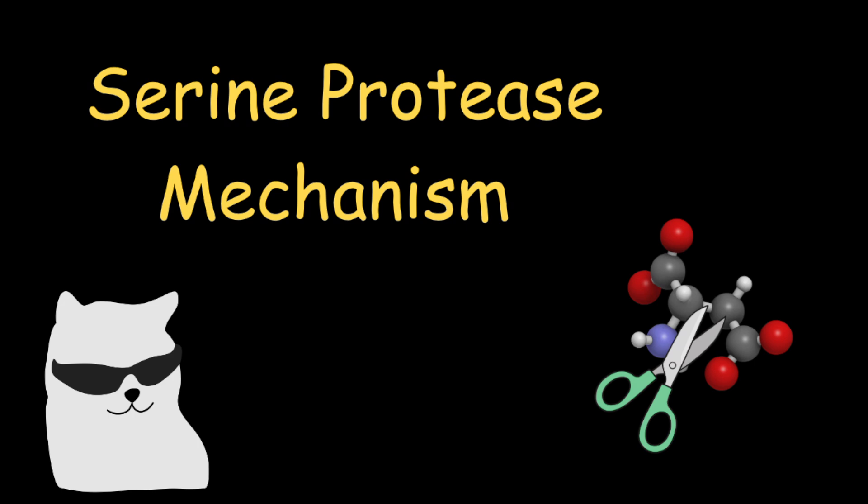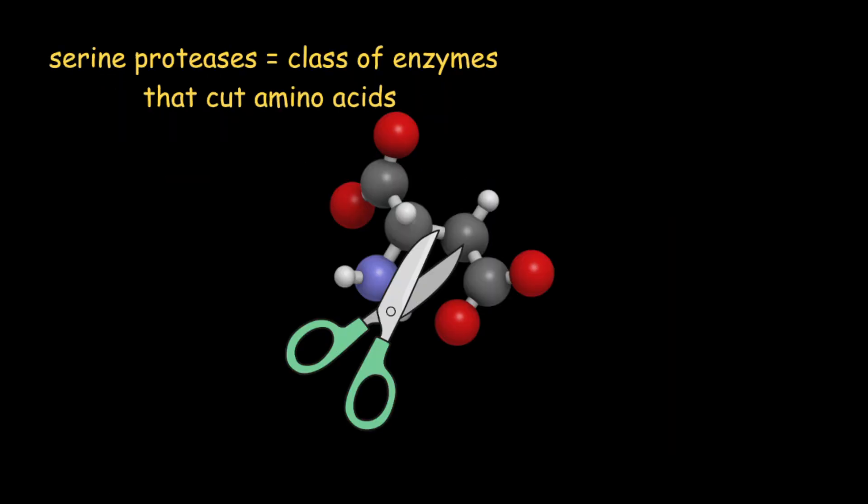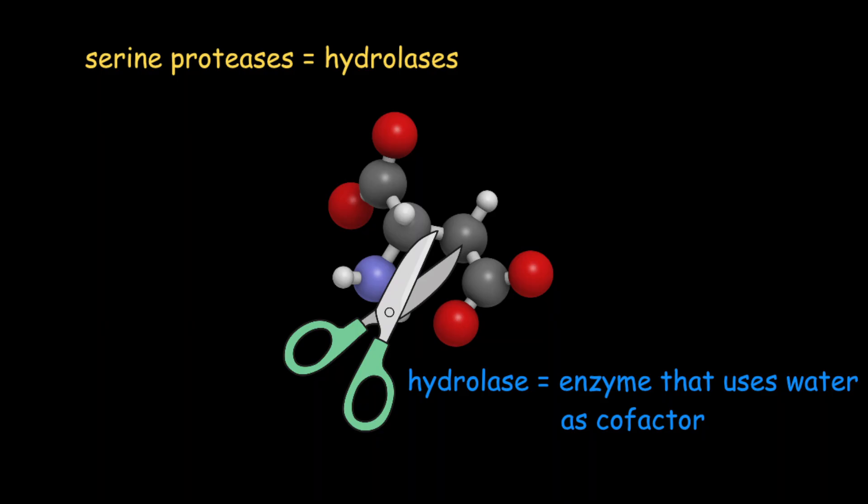Today we're going to talk about how serine proteases work. Serine proteases are a class of enzymes that cut amino acids. Since these enzymes use water as a cofactor, they're also classified as hydrolases.